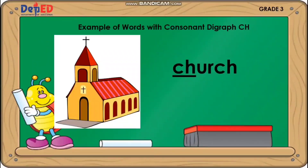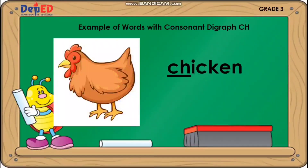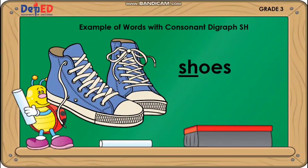These are examples of words with consonant digraph CH: Church. Child. Chicken.